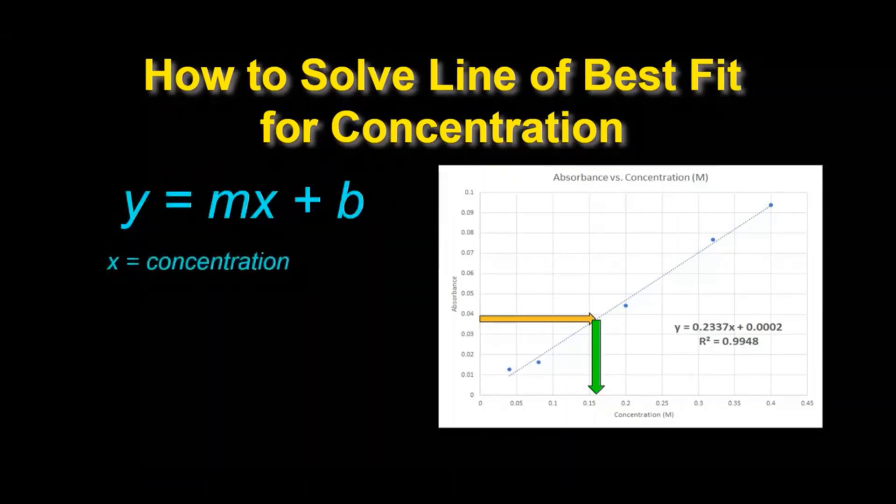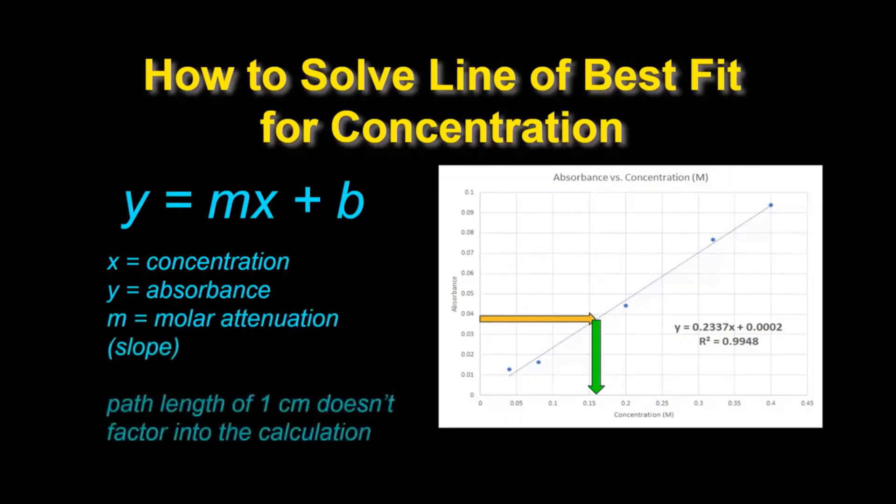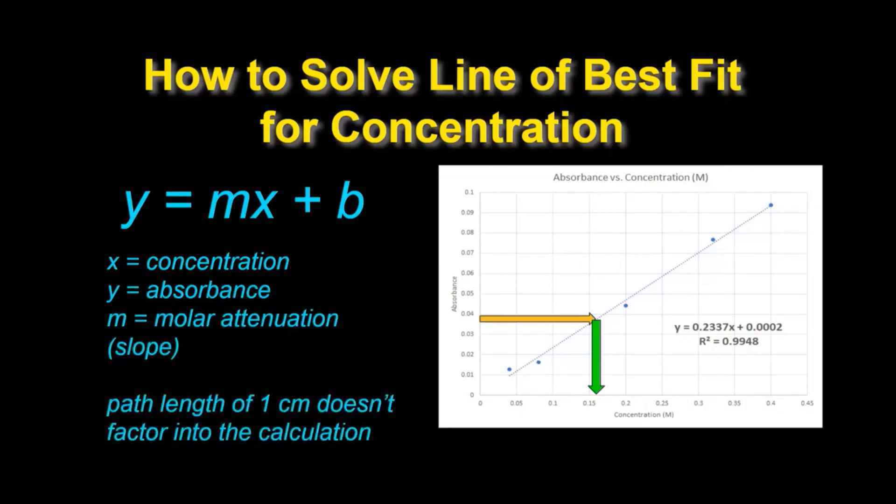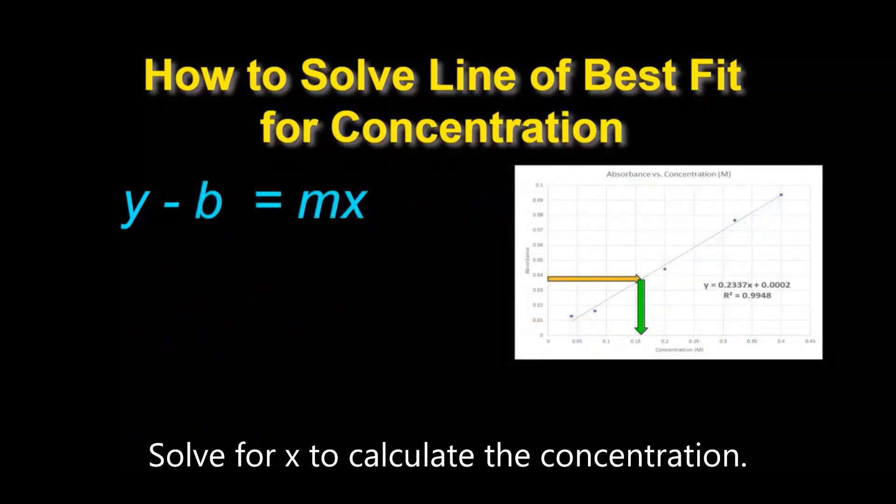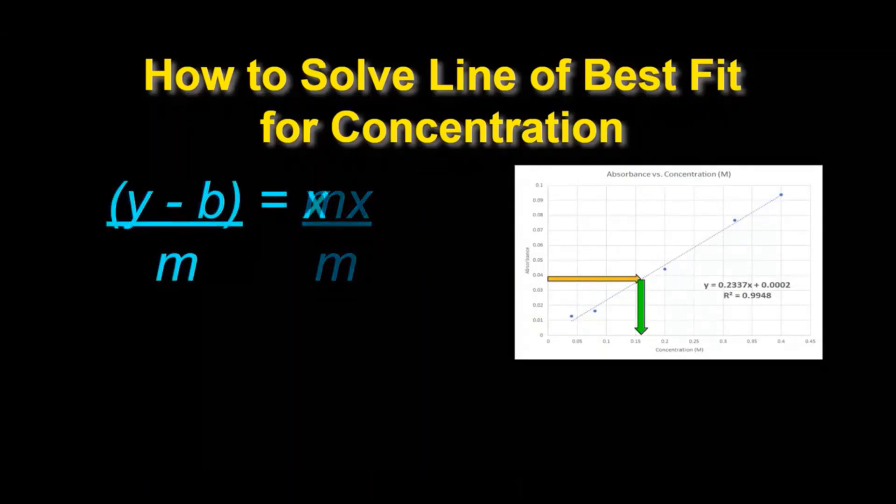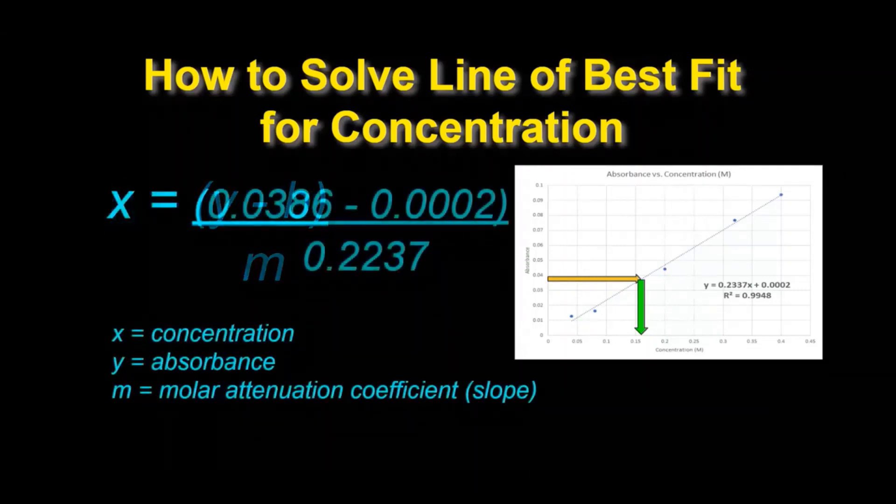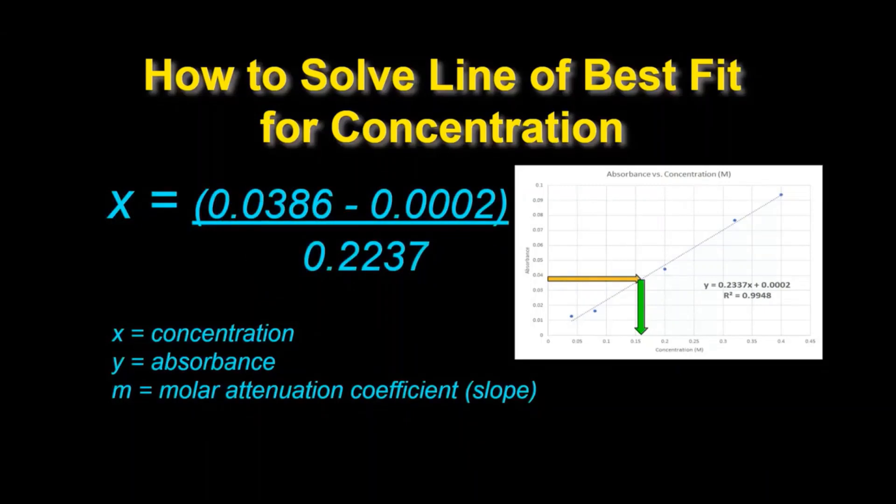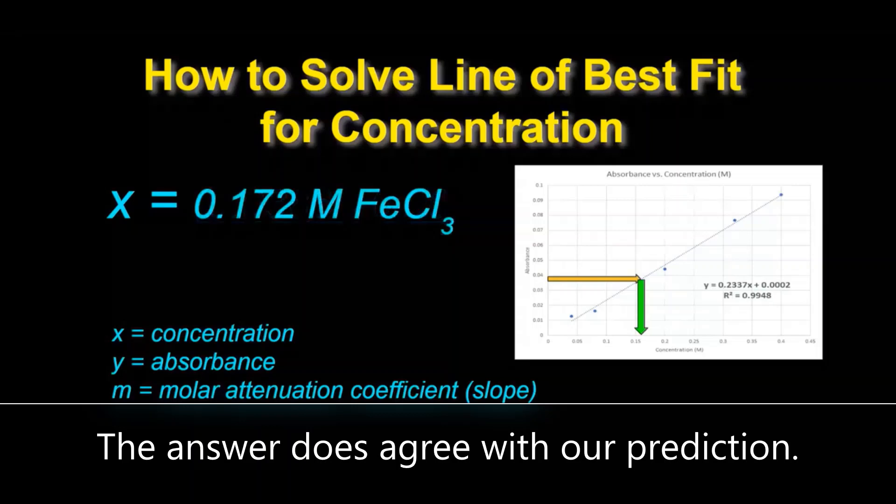Now using our linear regression analysis we want to take Y equals MX plus B, our normal form of the equation for a line, and we want to solve this for X. So the algebra to do this looks like this. We can rearrange to solve for X, and what we're going to wind up getting is Y minus B divided by M. Now this is what we'll use to calculate the concentration for the unknown sample, and we get an answer of 0.172 molar.